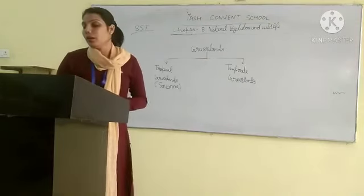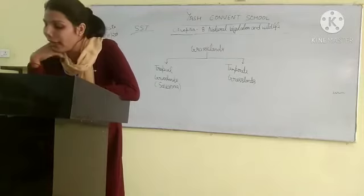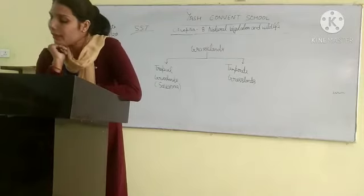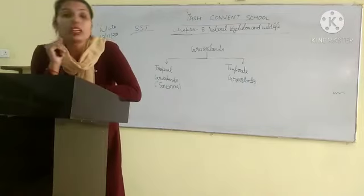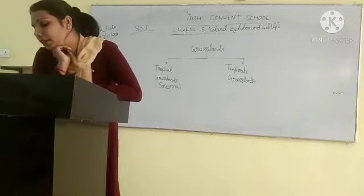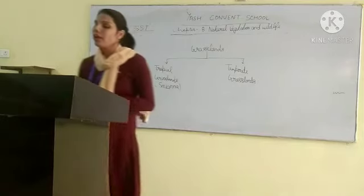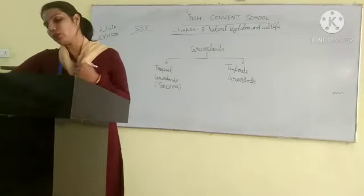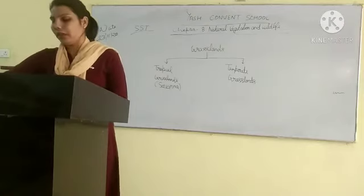Temperate grasslands are found in North America, Pampas in South America, South Africa, and in Australia. The rainfall in the areas where temperate grasslands are found is not sufficient everywhere.